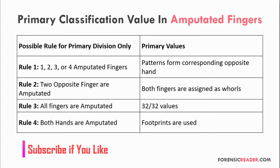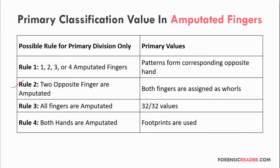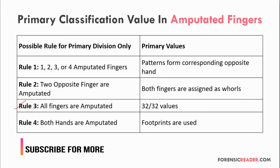For amputated fingers, there are four possible rules. Rule one: if one, two, three, or four amputated fingers are missing, use the patterns from the corresponding opposite hands. So if the right thumb is missing, the pattern from the left thumb is used. Rule two: if two opposite fingers are amputated — for example right thumb and left thumb — name them both as whorls. Rule three: if all fingers are amputated, the primary value will be 32/32. Rule four: if both hands are amputated, use the footprint to determine the primary classification value.